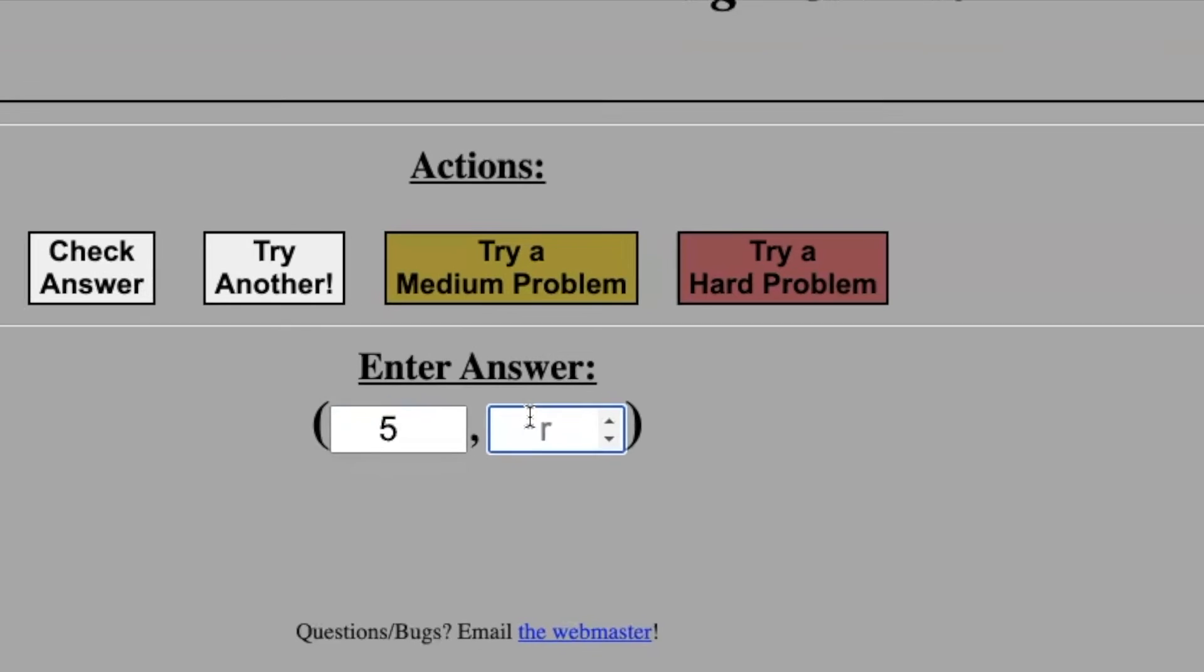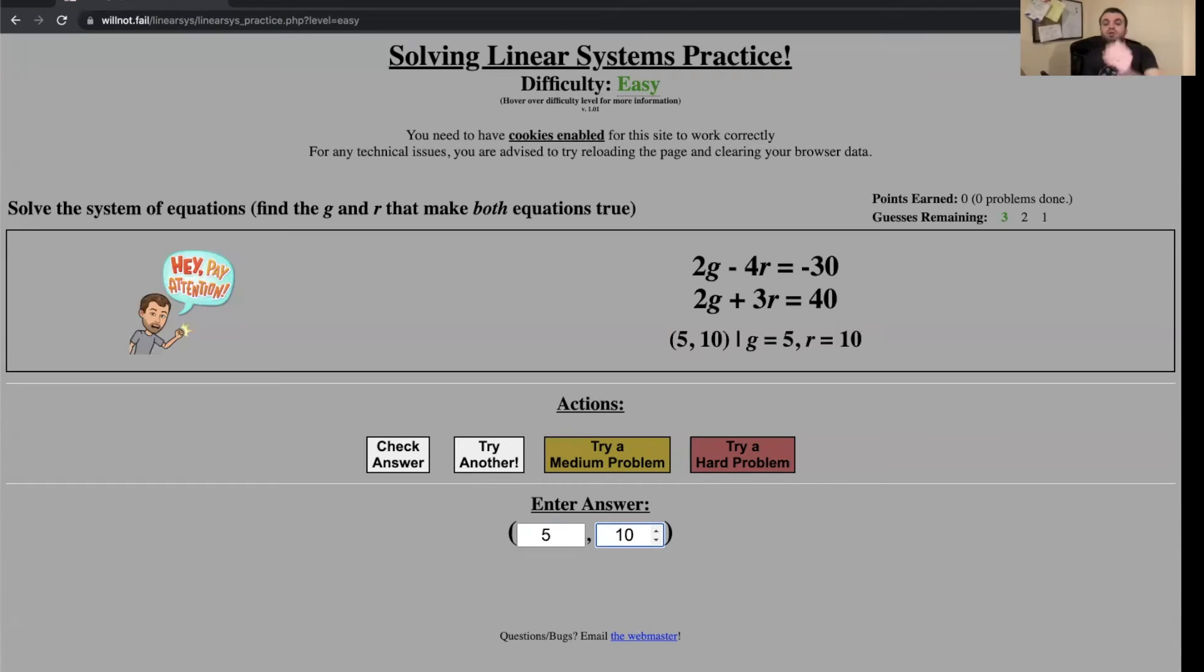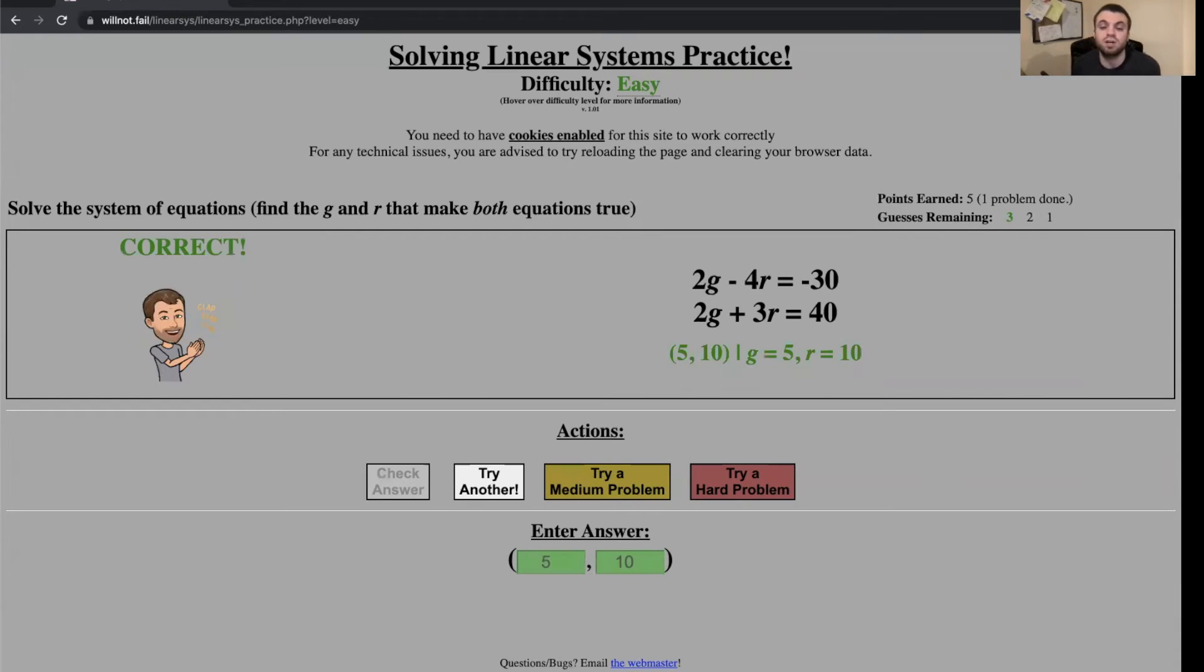I'm going to very carefully note g—see the box that says g—5, the box that says r—10. You'll see it will automatically refresh, you can see the answer that I'm plotting. To check the answer you either hit check answer or you can press the enter button. We got this correct. I've earned five points, you can see it says I've got one problem done.